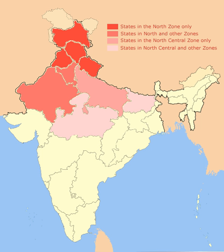The empires and dynasties that have ruled parts or all of North India include the Maurya Empire; the Indo-Greek Kingdom (c. 150 BCE), with Menander being the first to conquer Punjab; the Northern Satraps (1st century BCE); the Gupta Empire during the reign of Samudragupta (c. 335–550 CE); and the Empire of Harsha (606–647 CE).